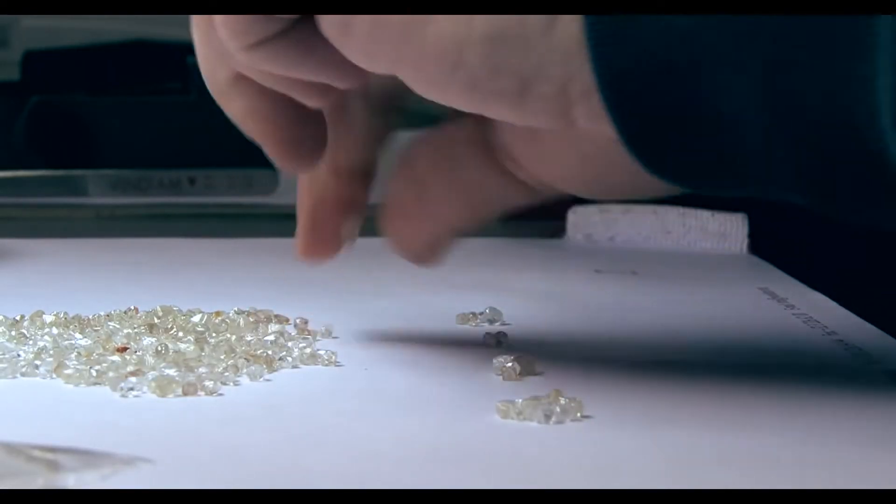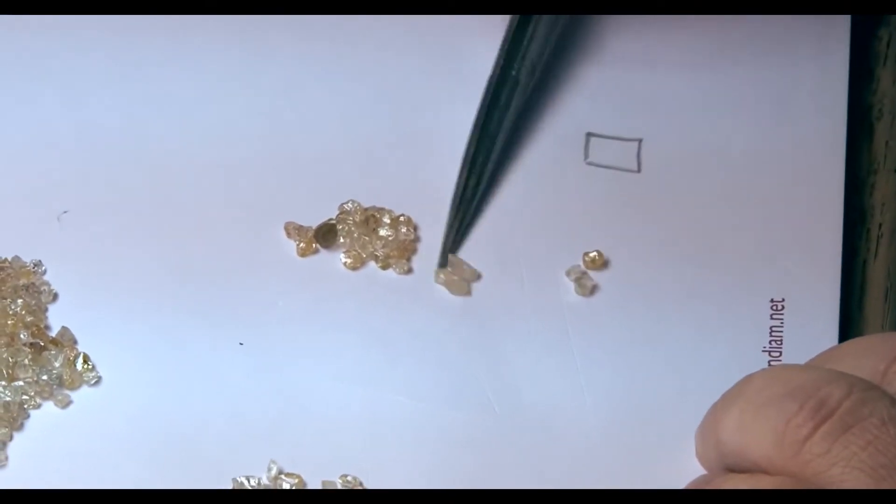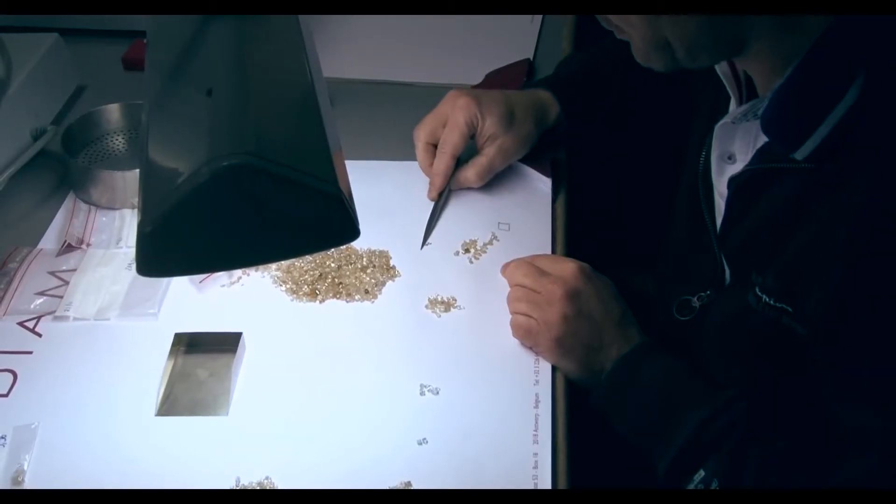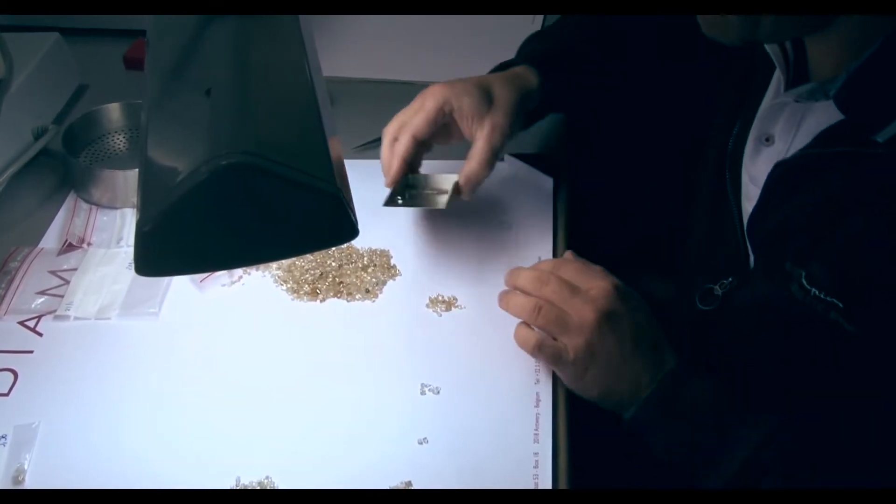For shape, the diamond sorters are not looking for stones to be either round brilliant or princess cut, but instead looking for makeable stones or sorable stones. A makeable stone is the name given to diamonds whose shape lends itself to having one large diamond cut from it. Sorable stones, on the other hand, will be cut in half in order to create two smaller diamonds.